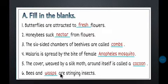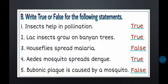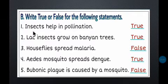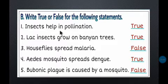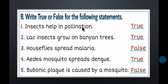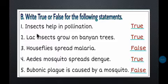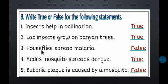Now Part B — True or False. Number one: Insects help in pollination. Pollination means the transfer of pollen grains from one flower to another. Butterflies, which are insects, carry out this transfer. So, insects help in pollination — that is True. Number two: Lac insects grow on banyan trees — that is also True.